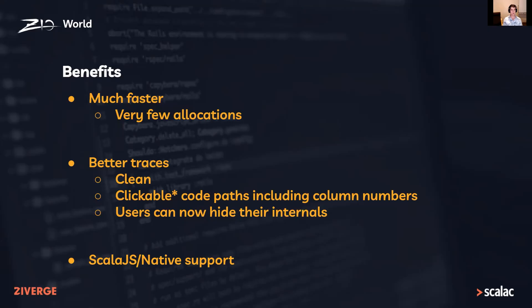We end up with way better performance due to very few allocations. We've got much better traces which are clean, and you've got clickable code paths. There's a little star there because IntelliJ seems to be a little bit inconsistent with picking these up — there is a little plugin which helps a bit, but it's still not ideal. There's some potential to include some extra support in ZIO for IntelliJ. Users can now hide their internals as well, pretty easily, which was not previously available. And as I mentioned, we've got Scala.js and native support now.